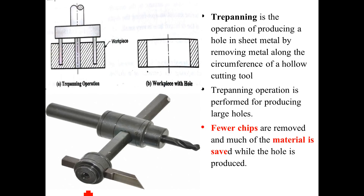The next operation is trepanning. Trepanning is the operation which produces a large hole inside a workpiece where we cannot have a drill bit of the same large dimension. At the center we have a support and one cutter is used to cut a large hole. Trepanning is the operation of producing a large hole in metal sheets or in a workpiece by removing material along the circumference using cutting tools. It is not a drilling operation because here we use a single point cutter with the help of a central drill as support. Few chips are removed and much of the material is saved since we cut only along the circumference.